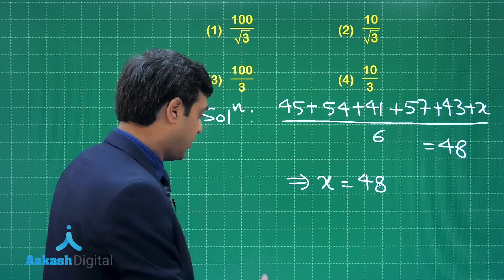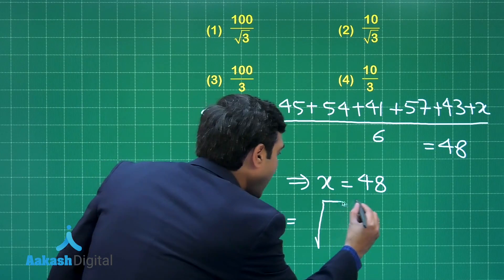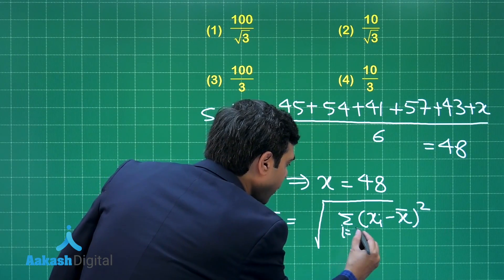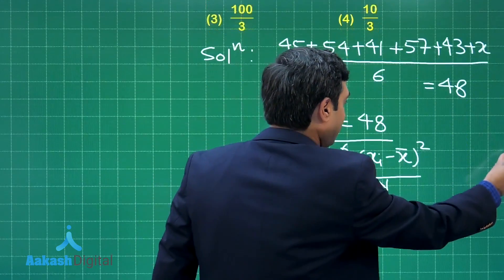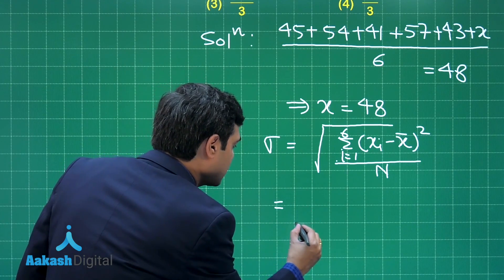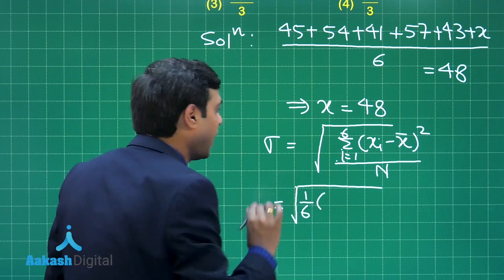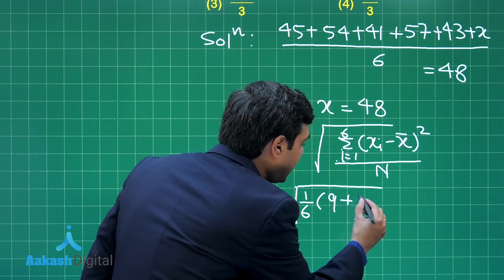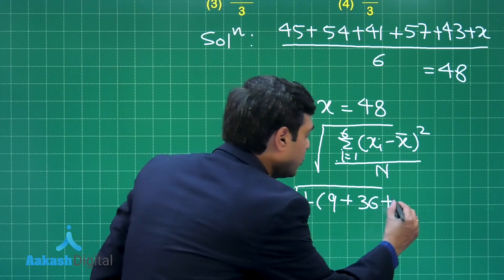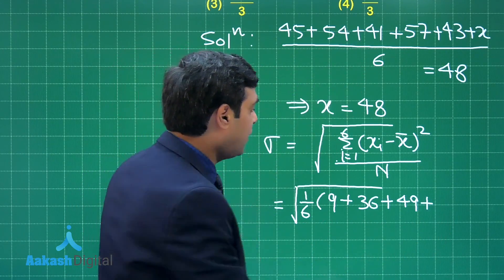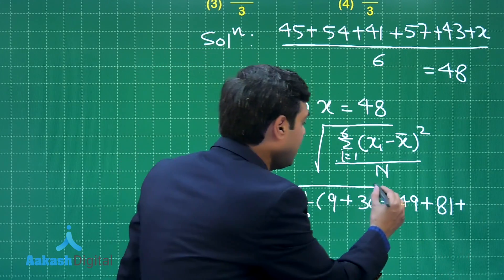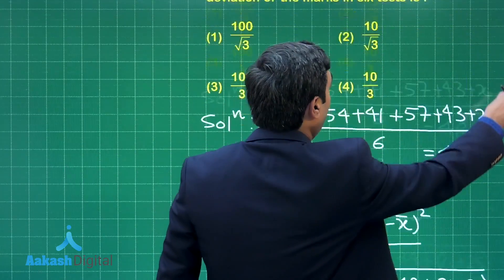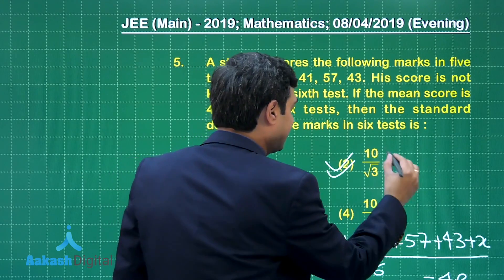We need the standard deviation, given by √(Σ(xᵢ - x̄)² / n) for i = 1 to 6. This gives √(1/6 × [(45-48)² + (54-48)² + (41-48)² + (57-48)² + (43-48)² + (48-48)²]) = √(1/6 × [9 + 36 + 49 + 81 + 25 + 0]). Simplifying gives 10/√3. From the given options, 10/√3, that is option number 2, is the correct answer.